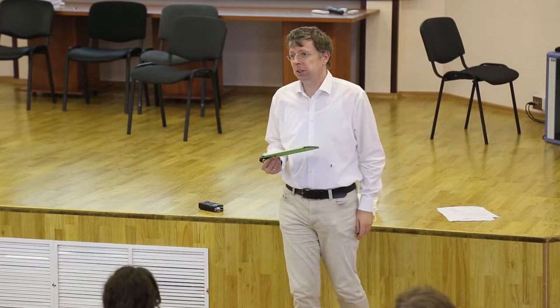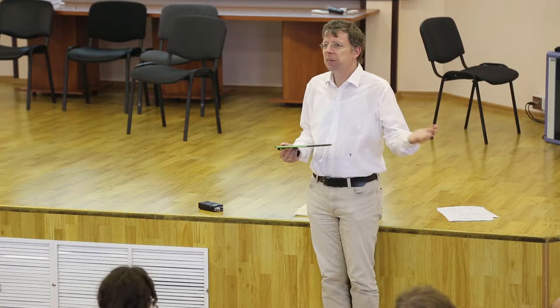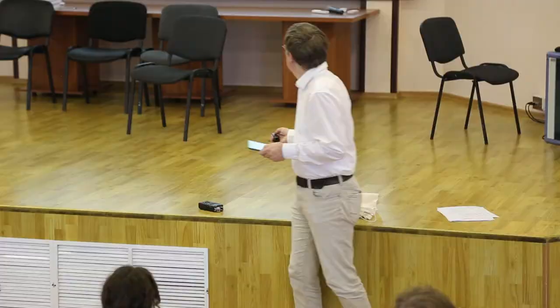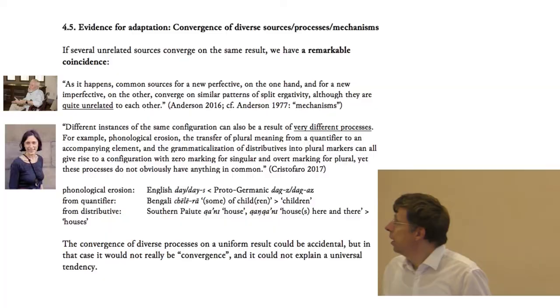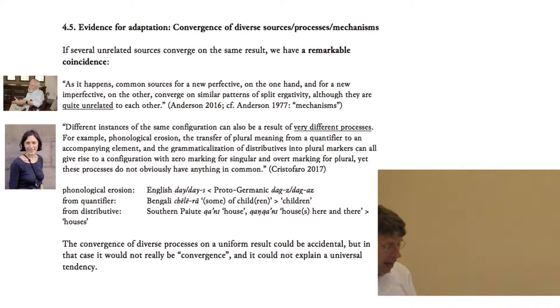Is it the case that perfective past forms only develop from anteriors? No, not really — they can also come from earlier past forms like the Germanic -ed path. Can future forms only develop from intention forms? No, they can also develop from old present forms. So while there are these pathways, it's really not easy to argue that some changes are truly universal, especially given how little we know about language change in many parts of the world. This is another reason why functional adaptive constraints are easier to justify.